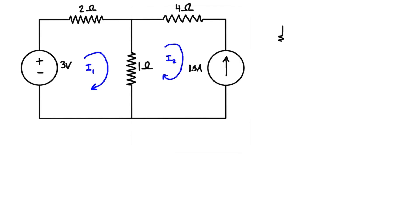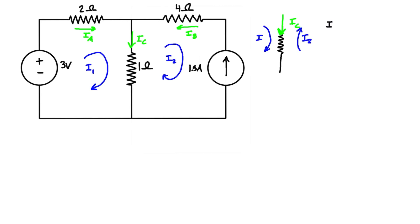Let's assume some currents for all of these branches. We'll say Ia is going this way, there's another current IB here, and a current IC going down through the one-ohm resistor — we can just assume the directions; if we get negative magnitudes, we've just got them in the wrong direction. Looking at IC, we have mesh one going this way as I1 and mesh two going up as I2, so IC is going to be equal to I1 minus I2.